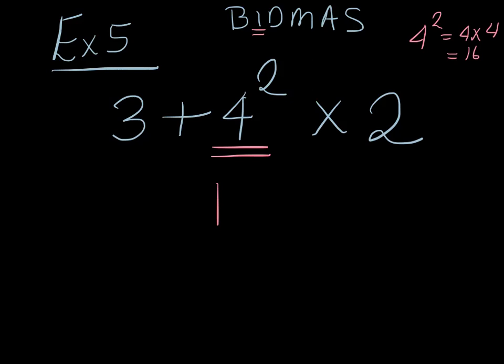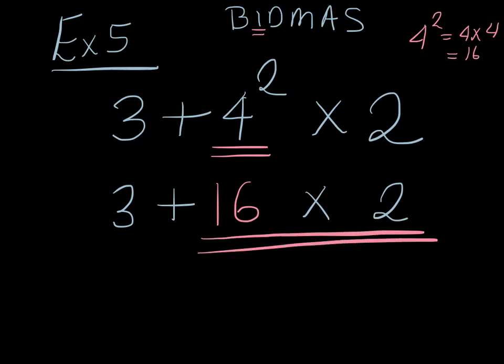So we're going to write our 16 in there first. And we've got 3 + 16 × 2. Now we're going to apply BIDMAS again to this line. There's no brackets or indices, but there is a multiplication here, which must happen before that addition. Now, 16 × 2, that is 32. And we've got the 3 + 32. And we should have the answer 35. And we're done.